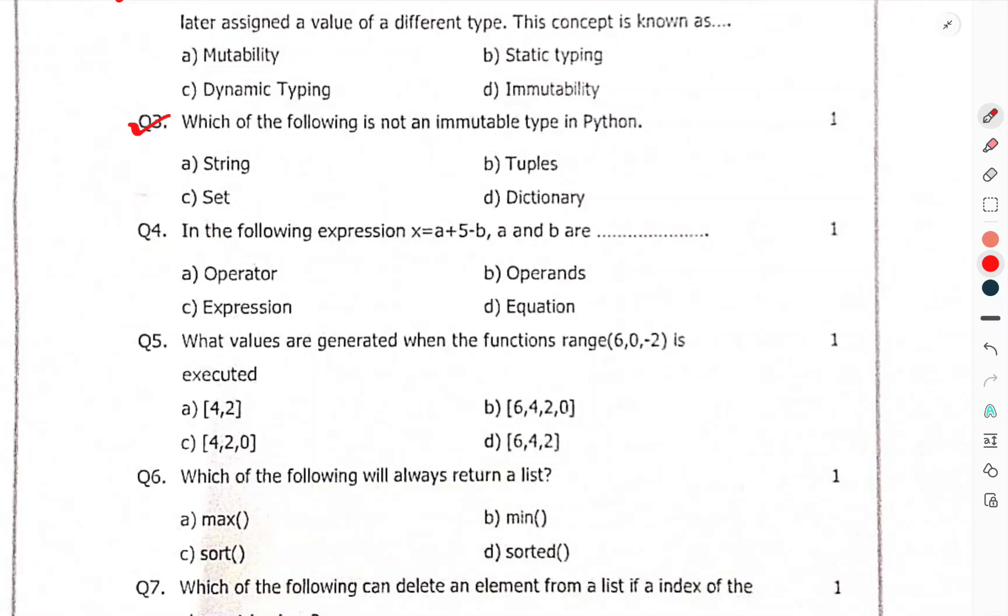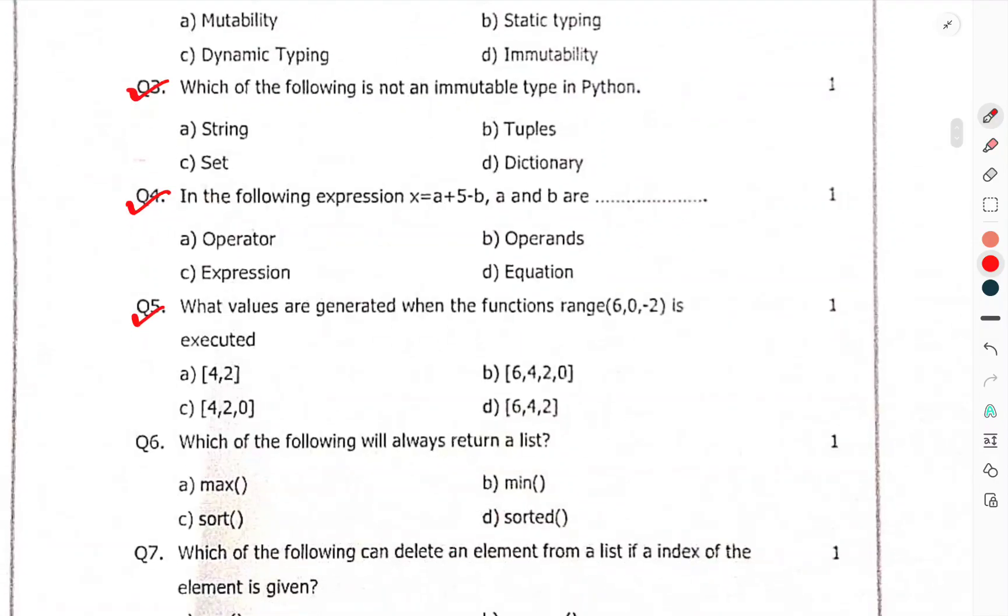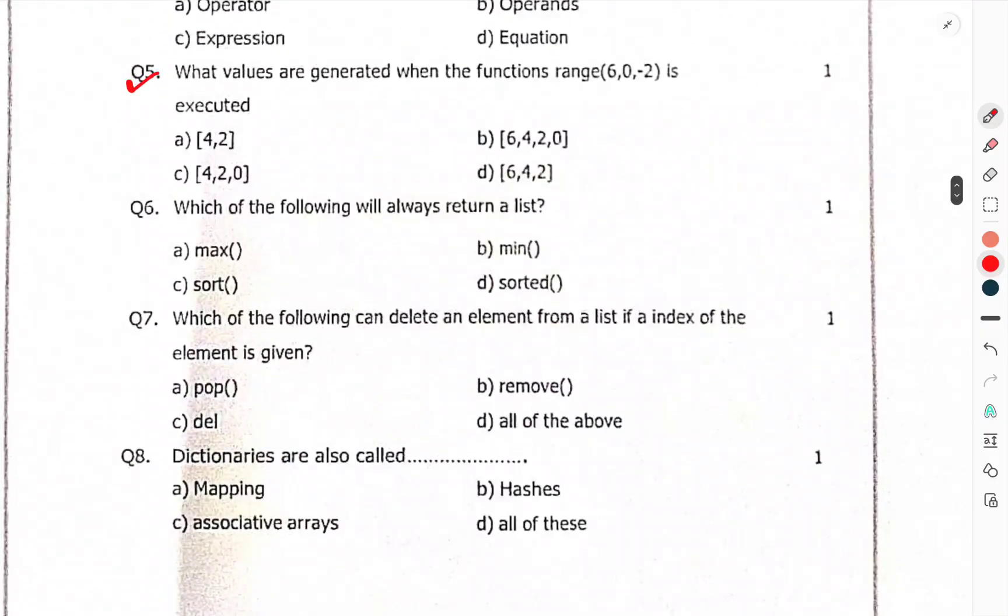Which of the following is not an immutable type in Python? In the following expression, x equals a plus 5 minus b, a and b are... What values are generated when the function range is executed?